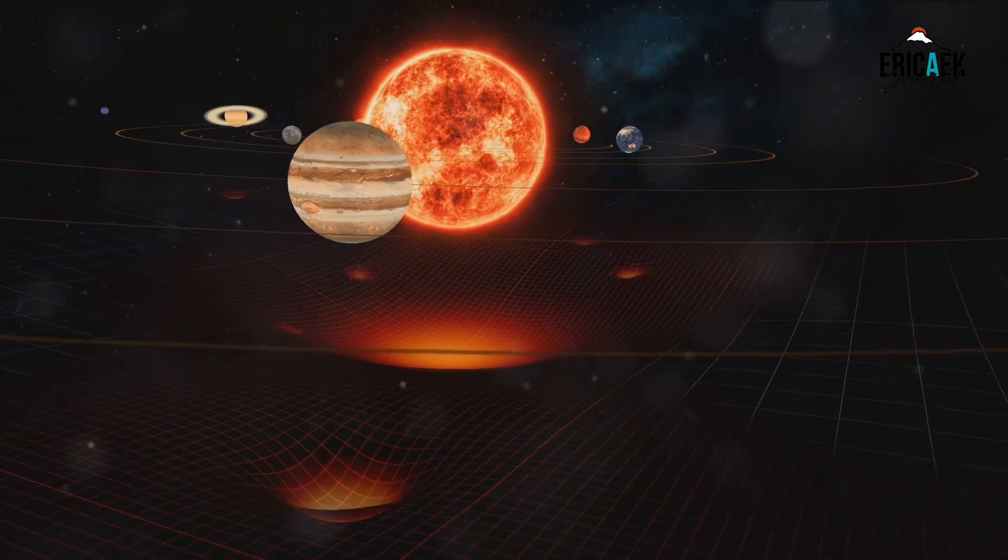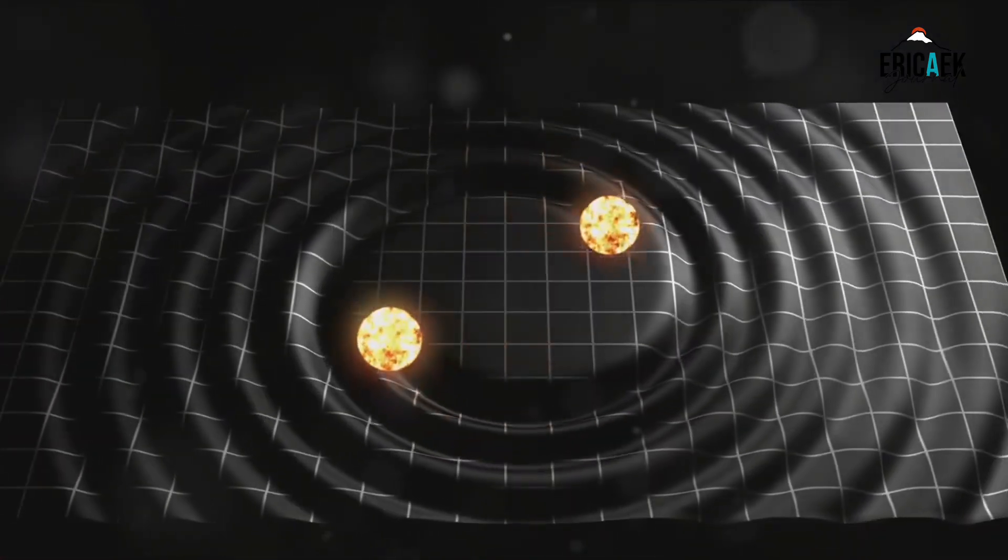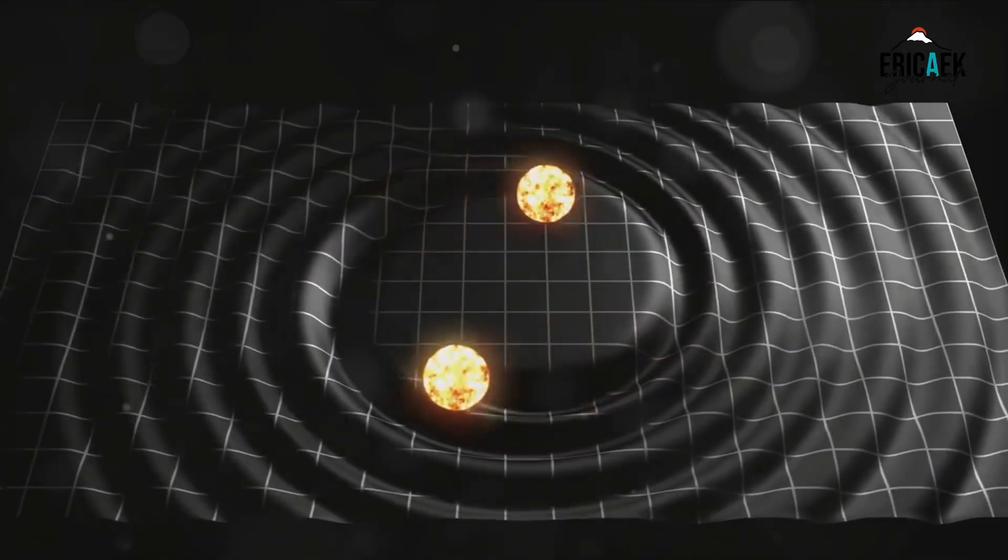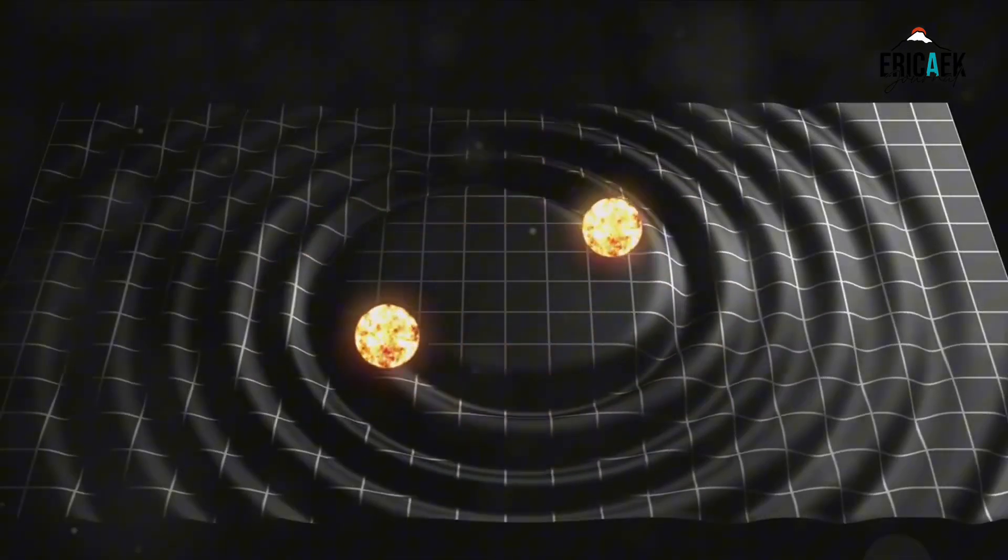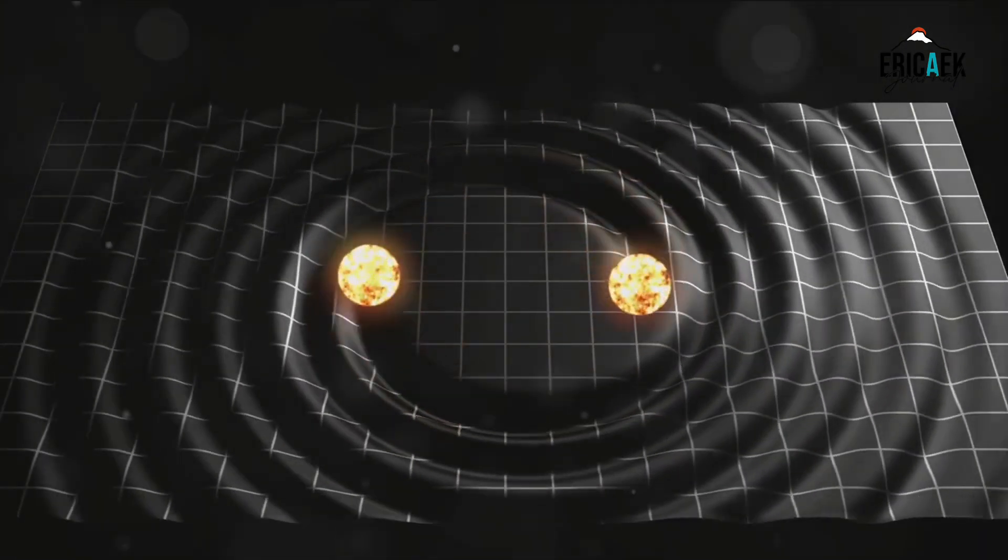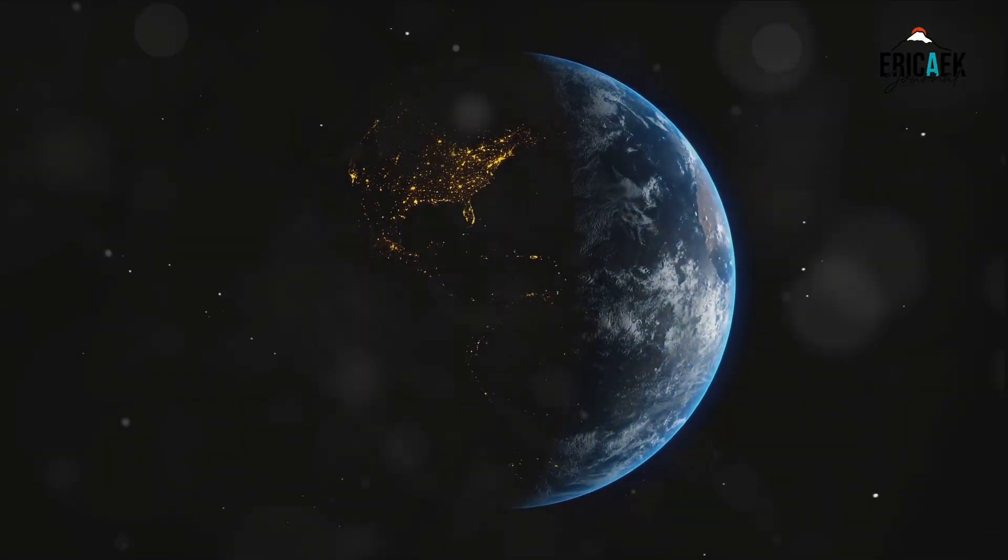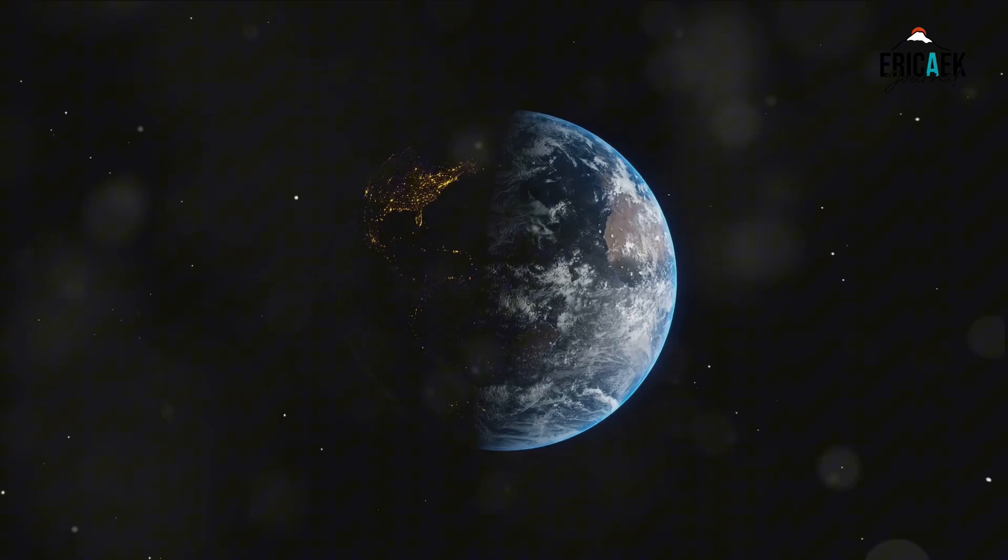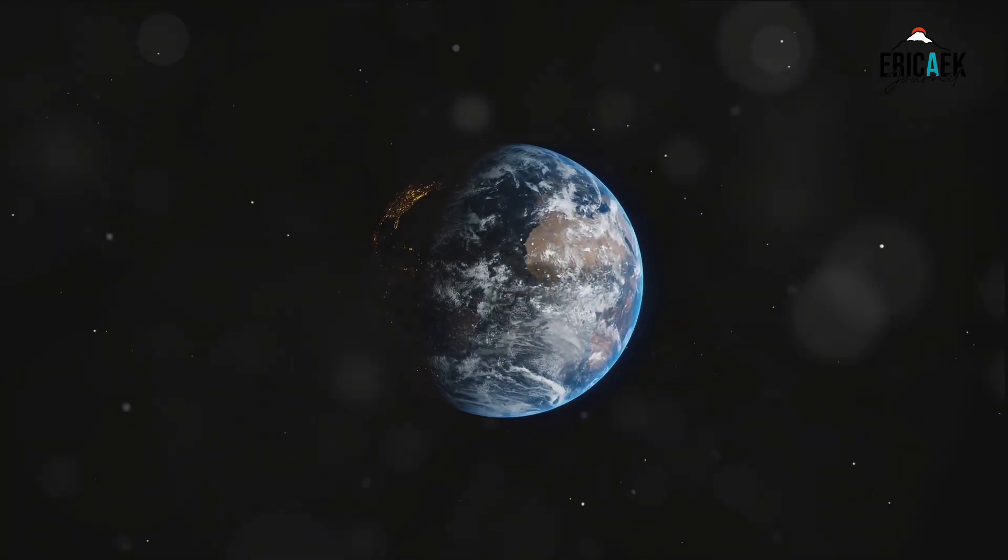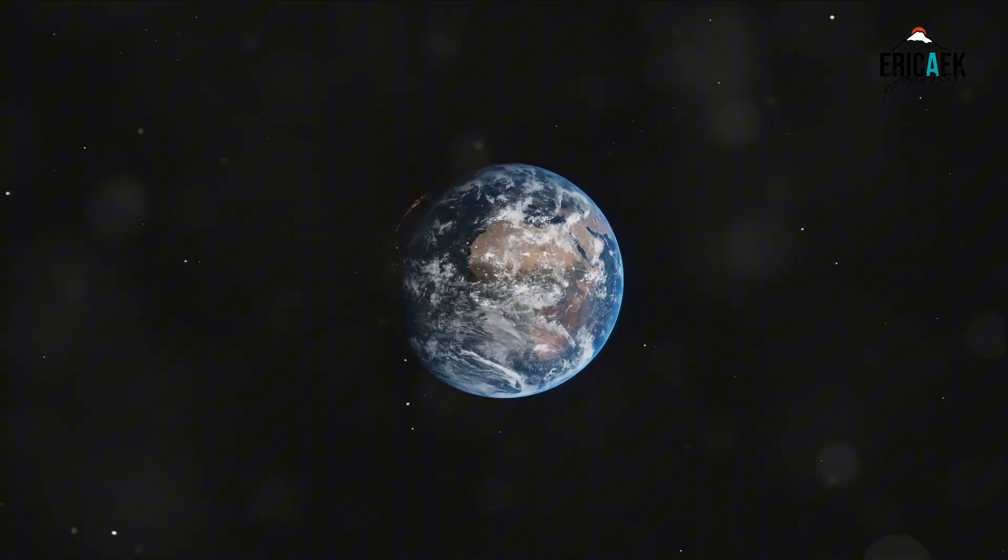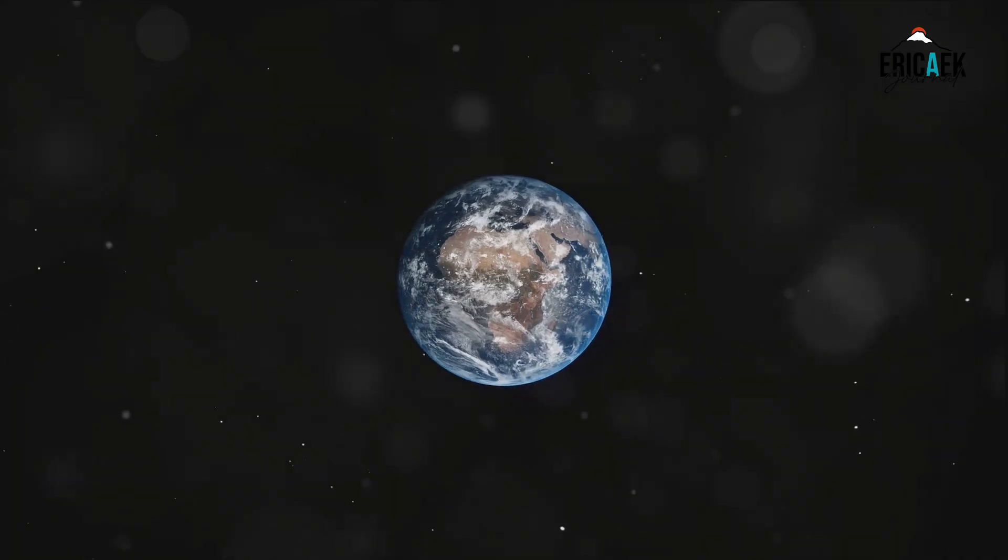Imagine a universe where every object, no matter how small or large, exerts a pull on every other object. This is gravity at work. The strength of this pull depends on two things: the mass of the objects and the distance between them. The more massive an object, the stronger its gravitational pull. Similarly, the closer objects are to each other, the stronger the gravitational attraction.